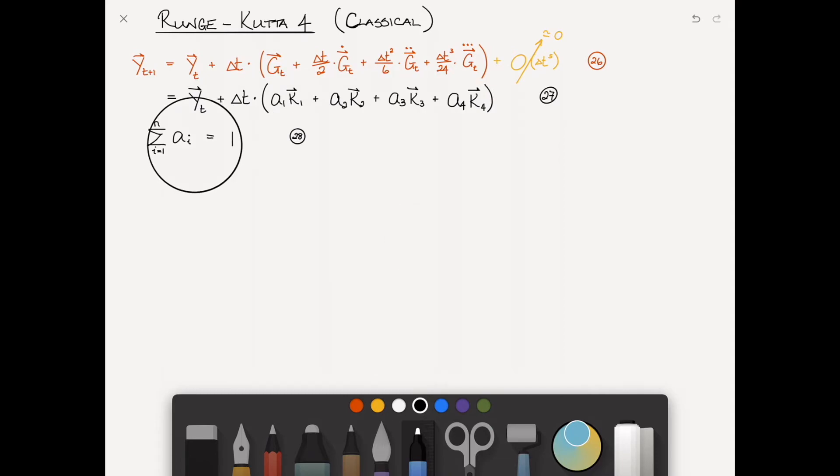We're going to approximate it with a Runge-Kutta integrator that looks like the following. Once again, the sum of all the weights is equal to one. And I'm not going to go through the math. I'll present the answers to you. It gets very, very tedious. It's mostly just algebra, a little bit of calculus. But the solution is as follows.